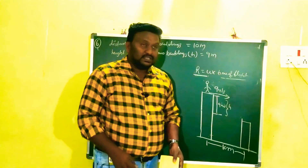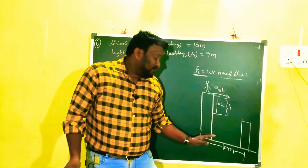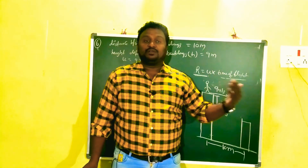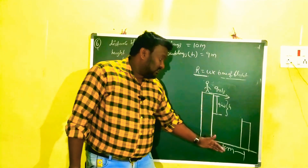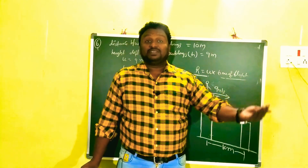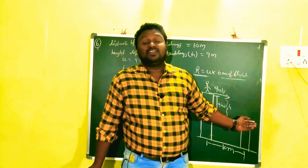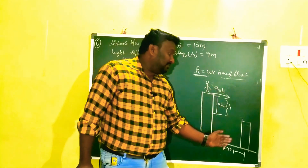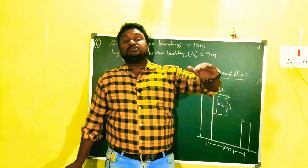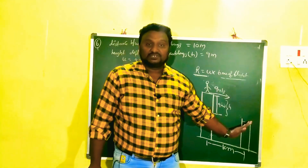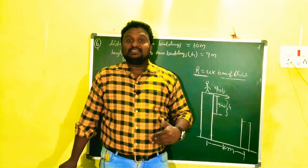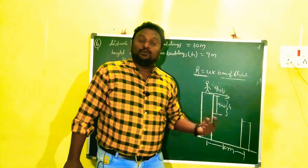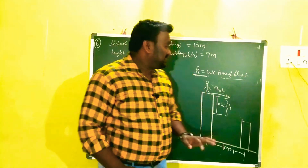The distance between the two buildings is 10 meters. When he jumps, if the range is more than 10 meters — say 10.1 or 10.2 meters — then the person will safely land on the next building. If he jumps only 9 meters or less, he will fall between the two buildings. So we have to check whether the range equals, exceeds, or is less than 10 meters.